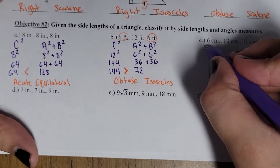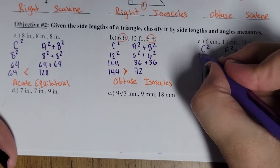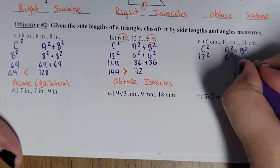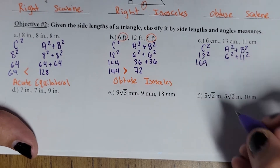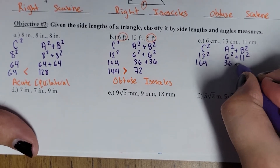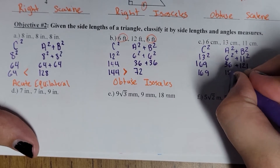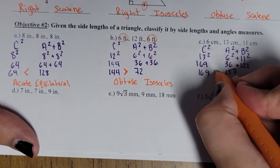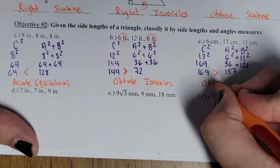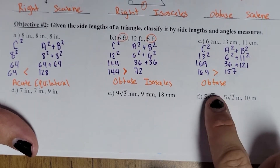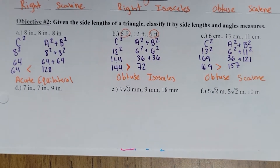Coming over here with sides 6, 11, and 13: C squared blank A squared plus B squared. The 13 is the biggest, so put 13 in for C. The order for the other two doesn't matter — just make sure C is the biggest. 13 squared is 169. 6 squared is 36 and 11 squared is 121; 36 plus 121 is 157. So 169 is greater than 157 — greater than represents obtuse. And since none of the three sides are the same, it's an obtuse scalene triangle.